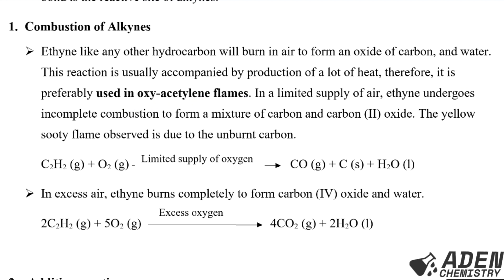In a limited supply of air, ethyne undergoes incomplete combustion to form a mixture of carbon and carbon monoxide. The yellow sooty flame observed is due to unburnt carbon. The equation is: ethyne gas + oxygen (limited) → carbon monoxide gas + carbon + water. In excess air, ethyne burns completely: 2C₂H₂ + 5O₂ → 4CO₂ + 2H₂O.